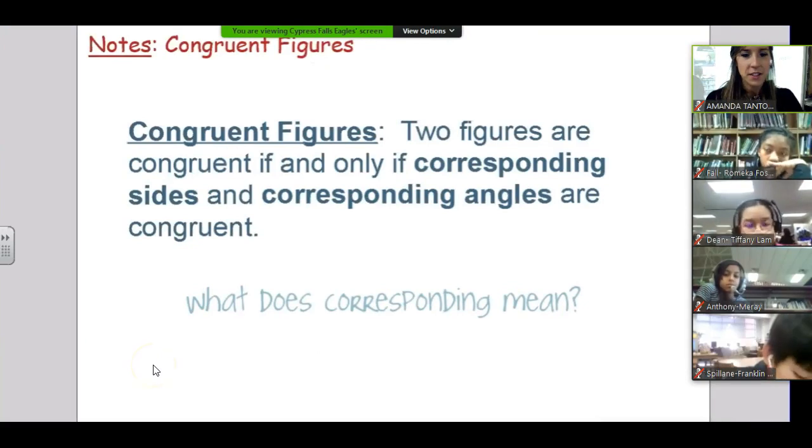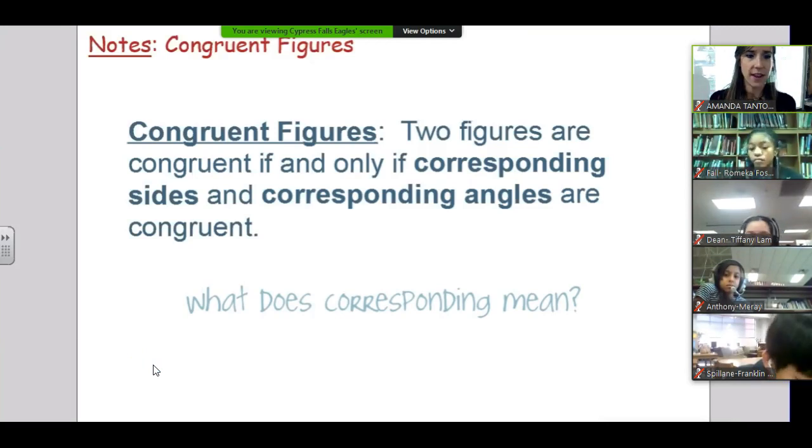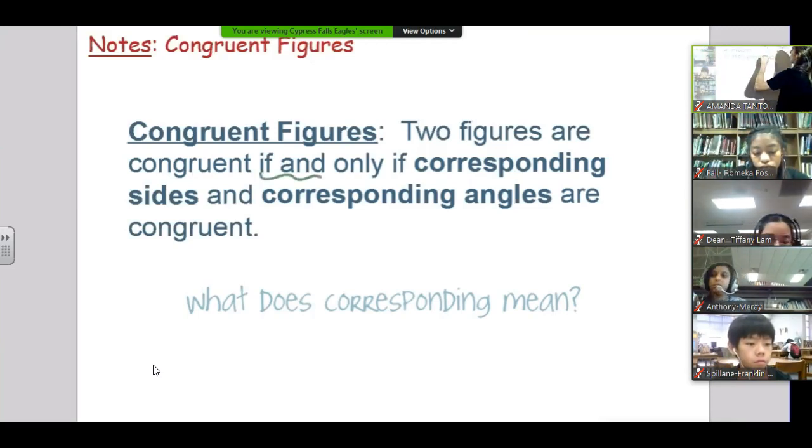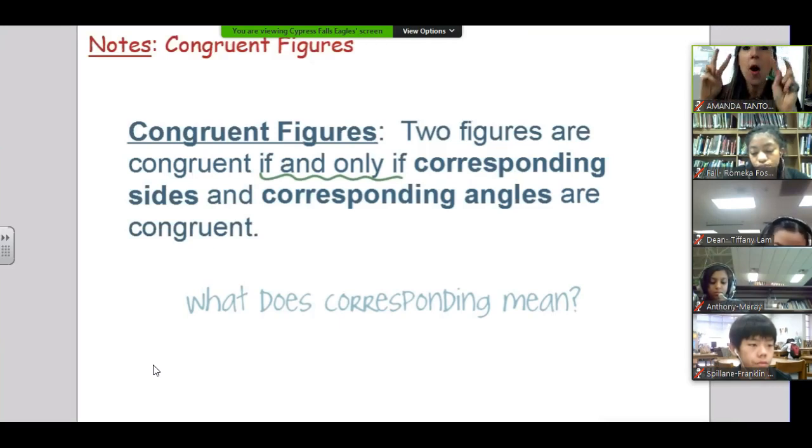So, you're writing this down. Congruent figures. Two figures. We're not just talking triangles. We're talking any figures. Octagons, trapezoids, whatever they might be. They're congruent if and only if. So, this is called a biconditional. If we say if and only if, there are no exceptions to it. Corresponding sides and corresponding angles are congruent. So, you can't have most of the sides congruent, and they're congruent figures. All of the corresponding sides have to be congruent in all the corresponding angles.